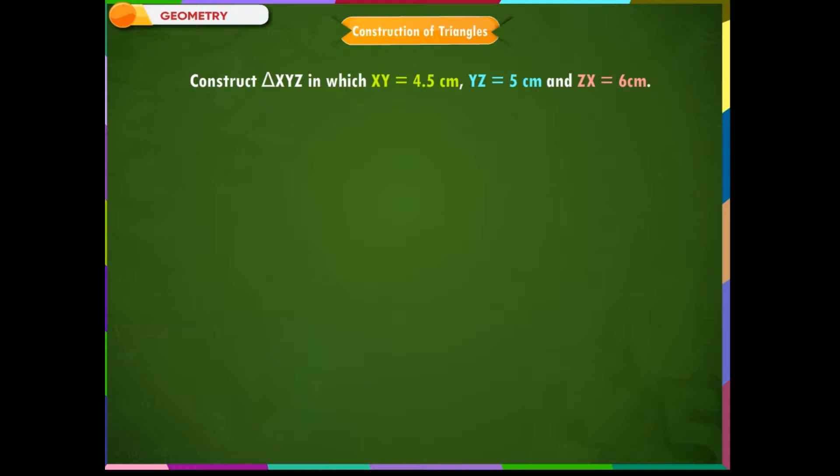In which XY is equal to 4.5 cm, YZ is equal to 5 cm, and ZX is equal to 6 cm. Step 1: Draw a line YZ of length 5 cm.